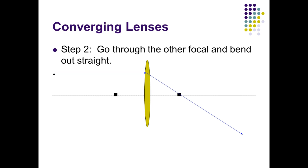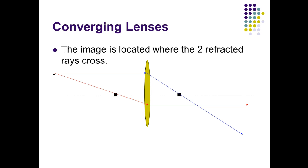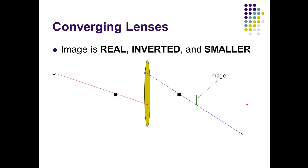For step two, I'm going to do quite the opposite. Since there are two focal points, in step one I went straight and then through the opposite side focal point. Now I'm going to go through the same side focal point — same side as the object — and when I hit the lens, I'm going to go straight. Step one goes straight and bends to the focal point; step two bends to the focal point and then goes straight. The image is located where the two refracted rays cross. The head of the arrow hits the point where those rays cross. This image is real because it's on the opposite side of the lens. It's inverted because it's upside down compared to the object, and smaller compared to the original object.